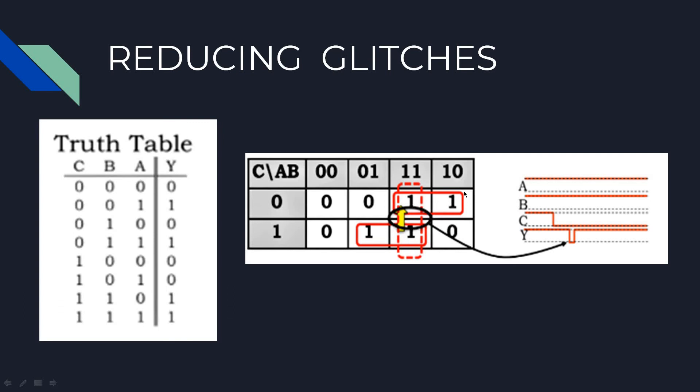So the expression will be A C-bar for this, BC for this, and AB for this. So the expression is going to be A C-bar plus BC plus AB. Now let us see how this will reduce the glitches.